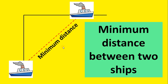In this video we are going to learn how to calculate the minimum distance between two moving ships or two moving vehicles which are moving along perpendicular directions. The first ship is moving along the east direction and the second ship is moving along the north direction. We have to find the minimum distance and after how much time the distance will become minimum.